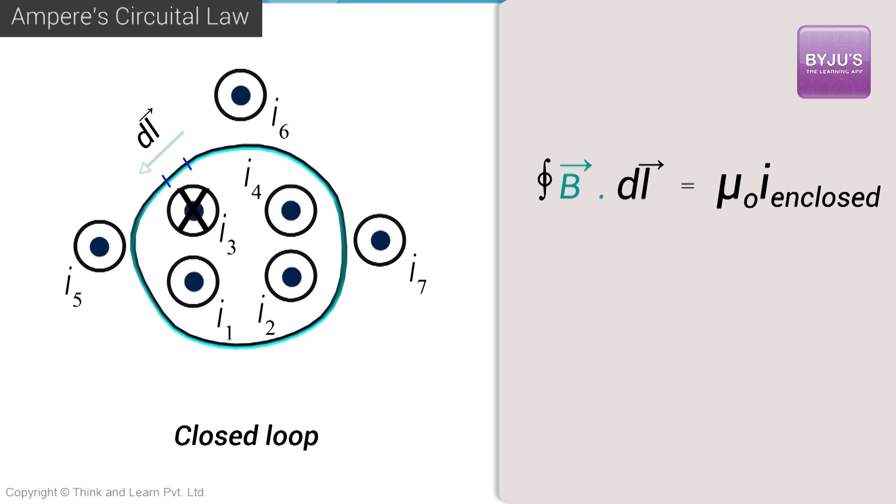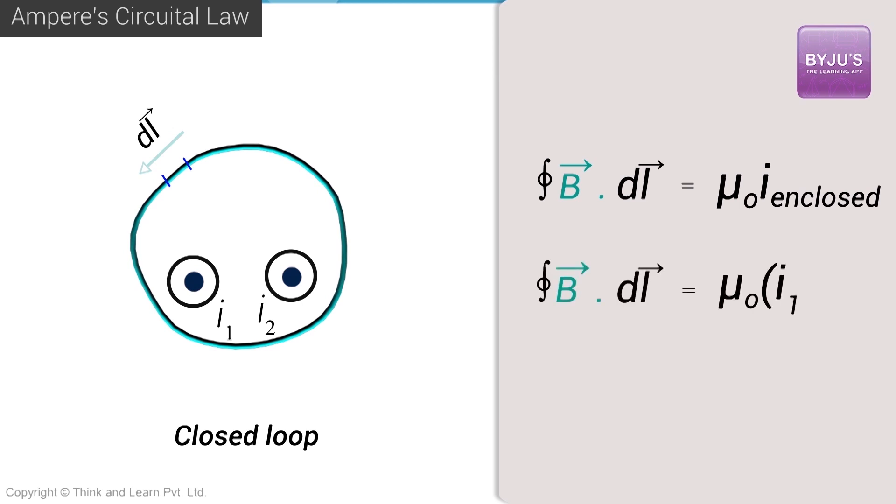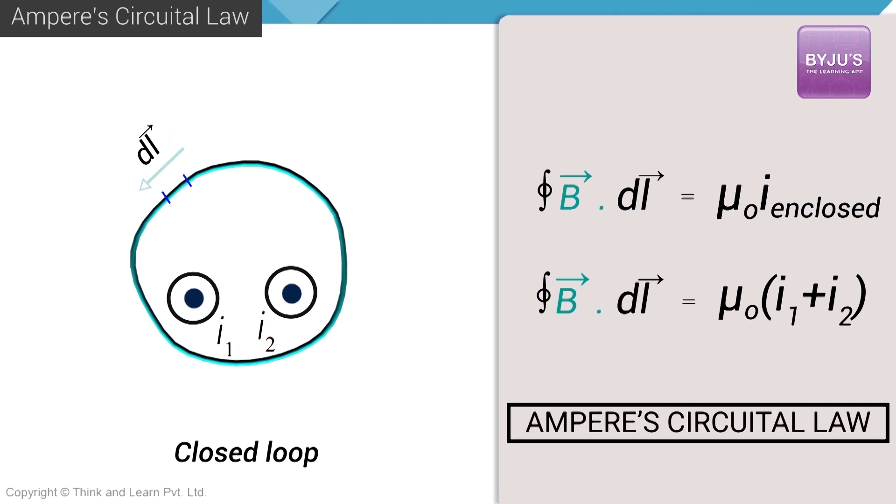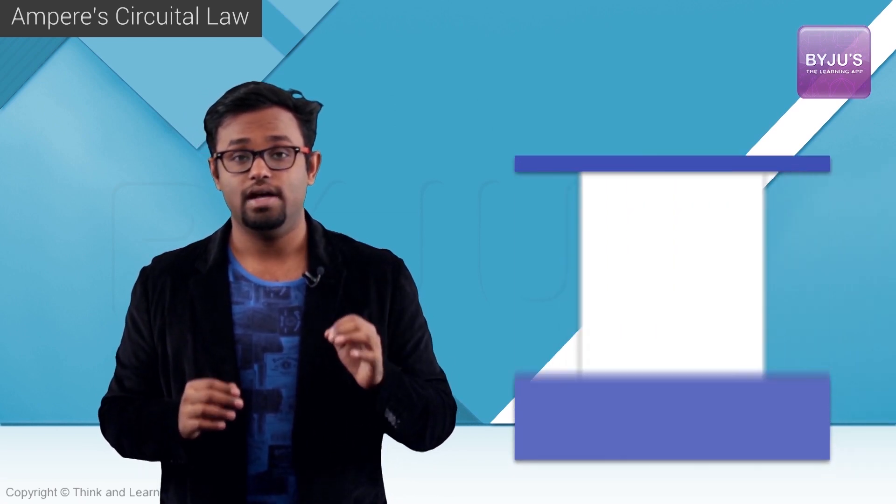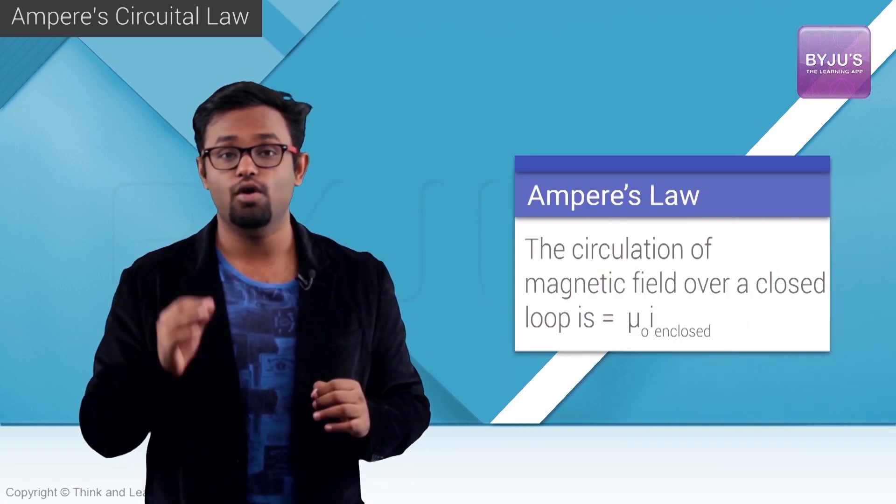That is equal to mu naught into I enclosed, the current enclosed inside it. Let's say there's a situation like this where you have two current carrying wires, then I can say that this integration of B dot DL will be equal to I1 plus I2. So that is what Ampere's circuit law is. Ampere's law states that the circulation of magnetic field over a closed loop is equal to mu naught times the current enclosed.